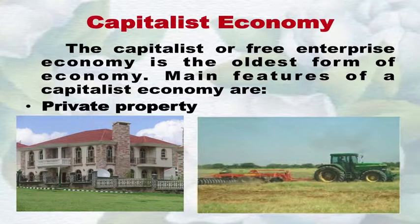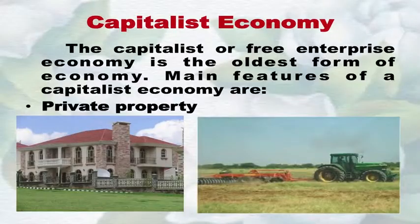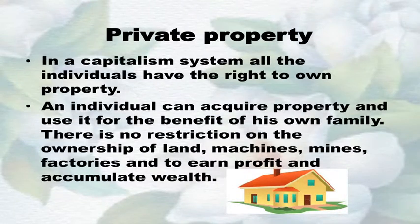Number one: Capitalist economy. The capitalist or free enterprise economy is the oldest form of economy. Earlier, economists supported the policy of laissez-faire, meaning live free, and advocated minimum government intervention in economic activities. Number one feature: Private property — in a capitalist system, all individuals have the right to own property and use it for the benefit of their own family. There is no restriction on the ownership of land, machines, mines, factories, and the right to earn profit.